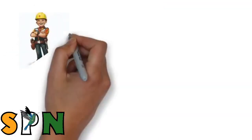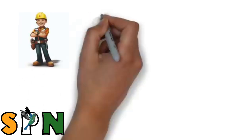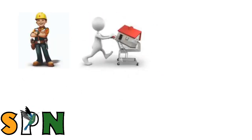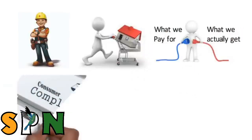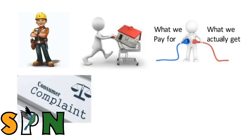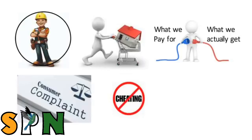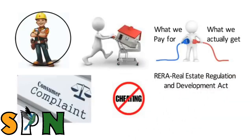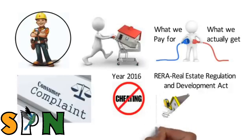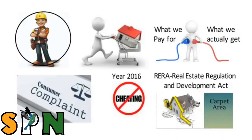Every builder calculates the area of a property in a different way. So while buying property, there is a lot of disconnect between what we pay and what we actually get. If we see the complaints filed in consumer court, the maximum number of cases are against builders on the issue of cheating. However, the latest Real Estate Act, RERA — Real Estate Regulation and Development Act — passed by the central government in 2016 has now made it mandatory to sell flats on the basis of carpet area only, because this is an area where many people get cheated.